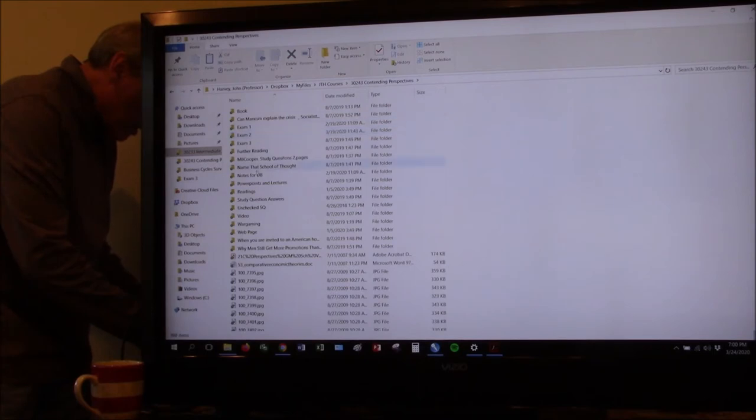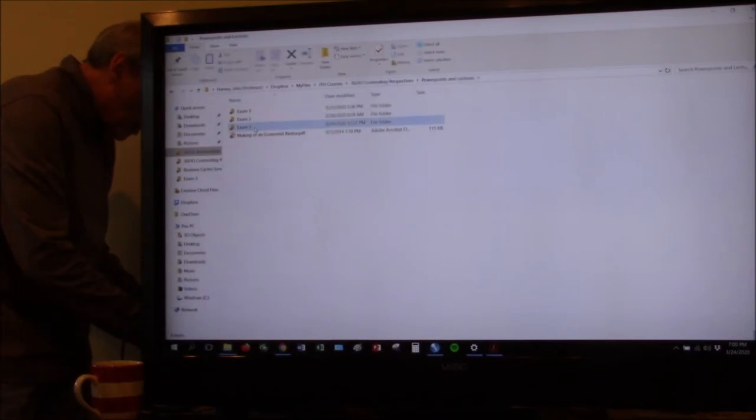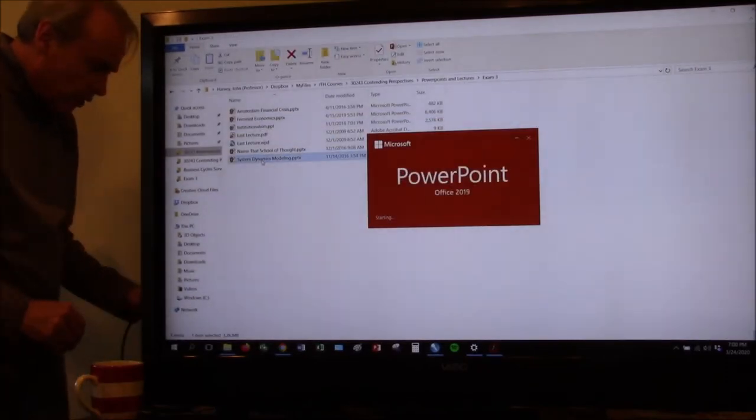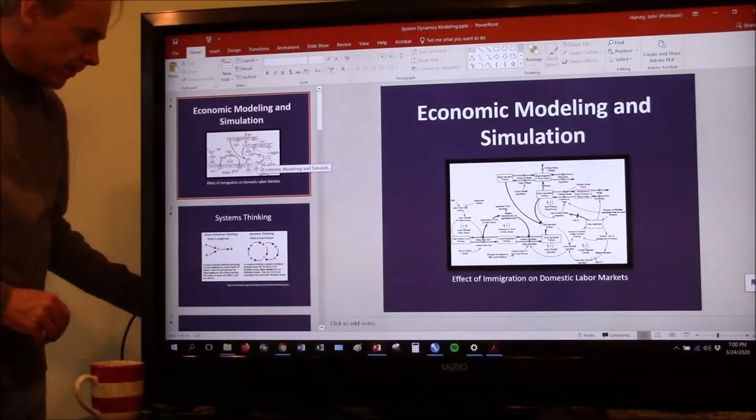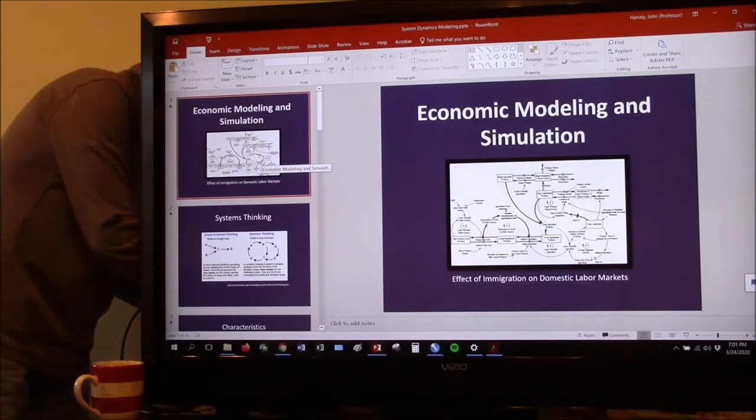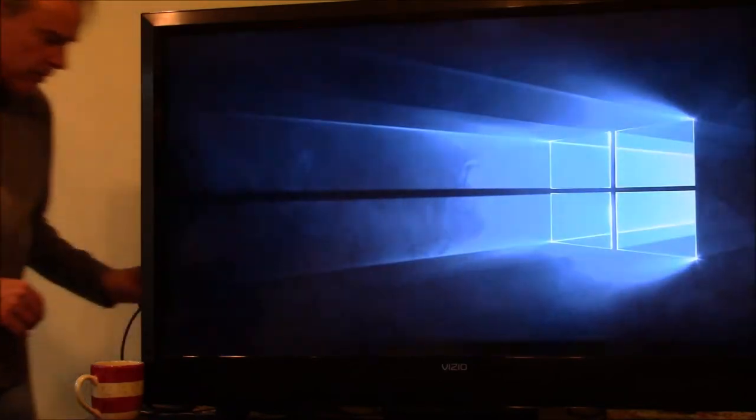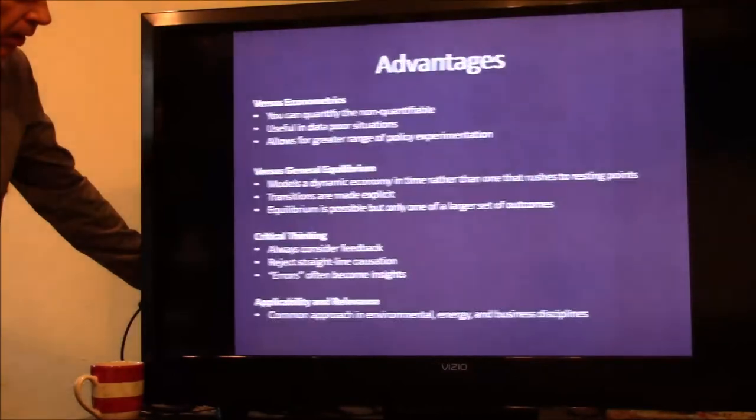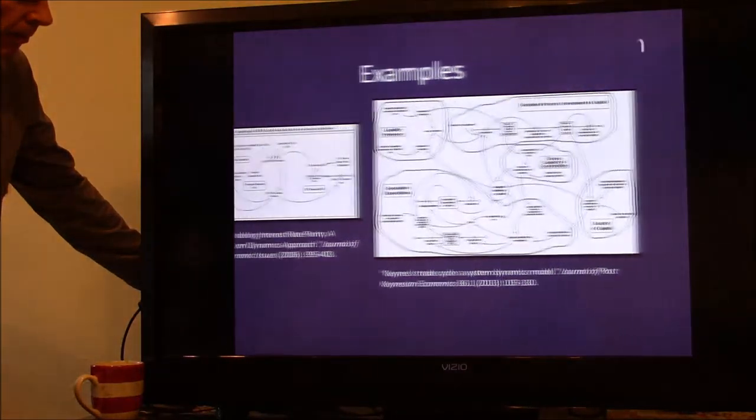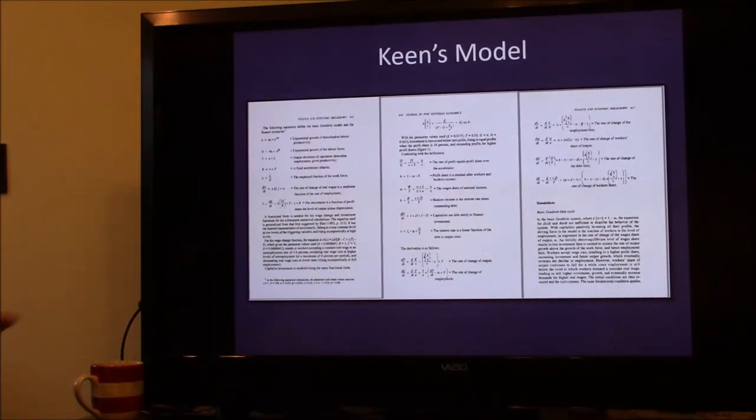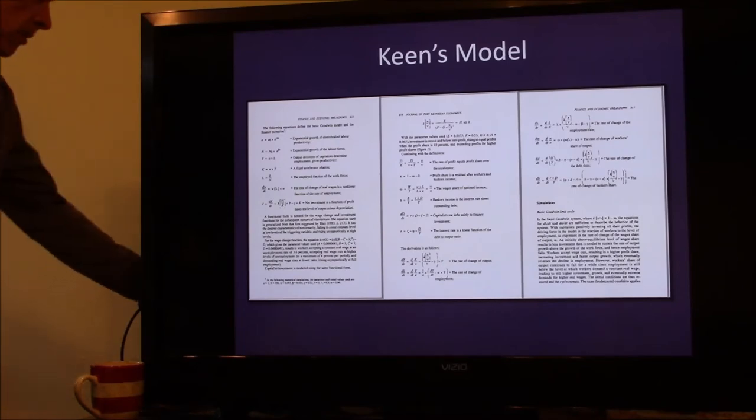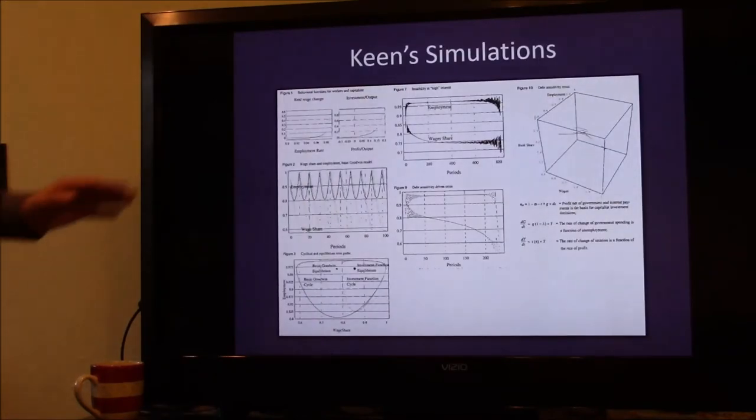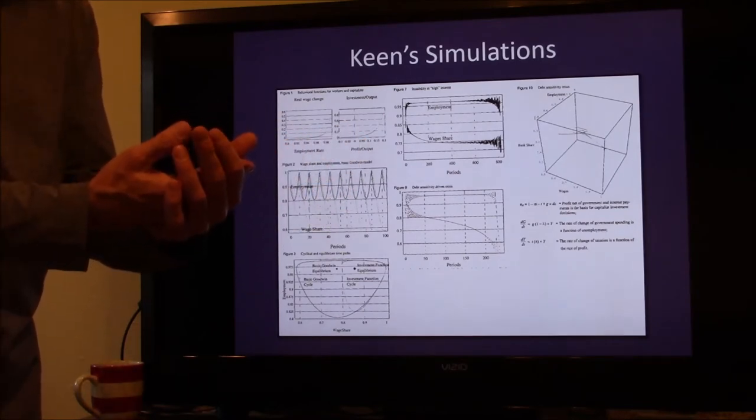It's really from the Contending Perspectives class, exam three. And yeah, I showed you this a little bit about the other day. But, well, it might be today for all I know you might be watching it all at once. But if we go here, this is the system dynamics modeling. If we go here to Steve Keen's paper, here's all these equations. And then he plugs them in a model and he gets these patterns.